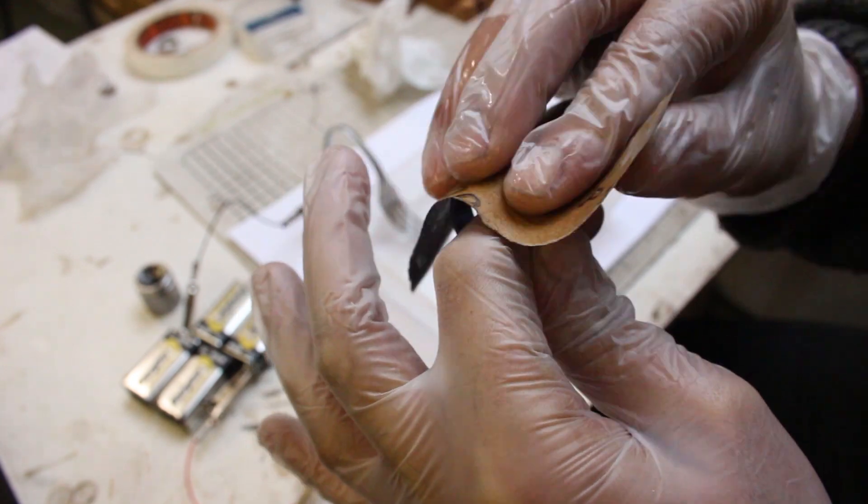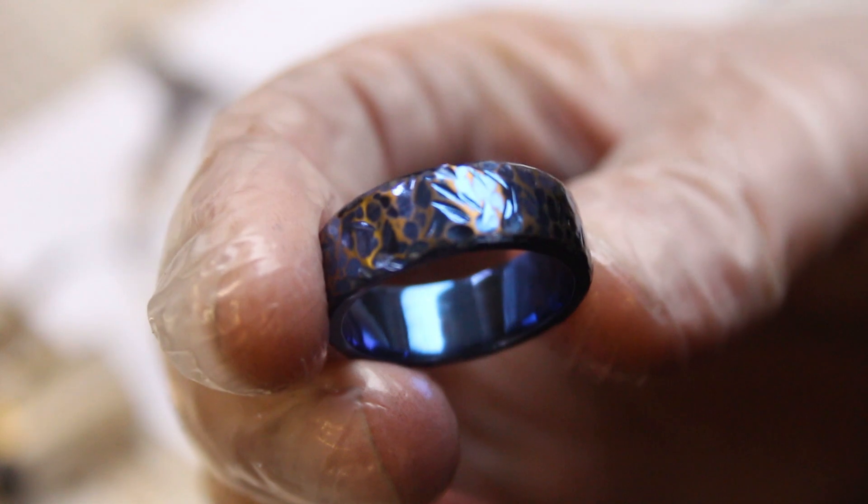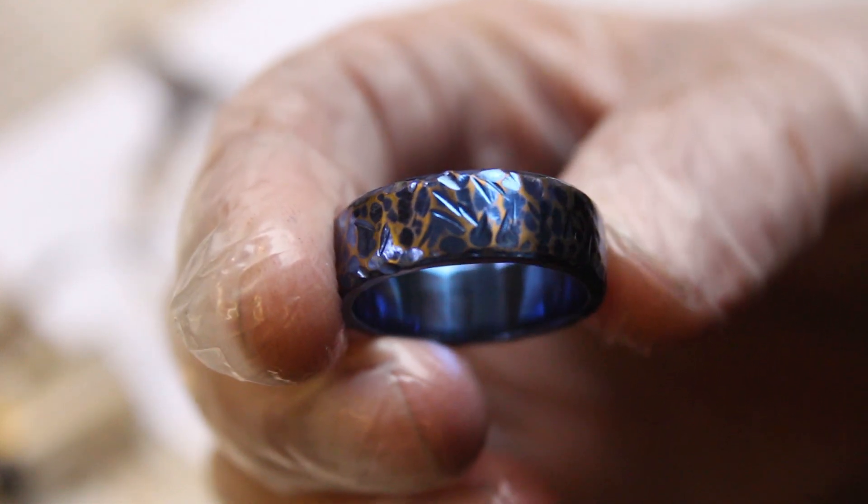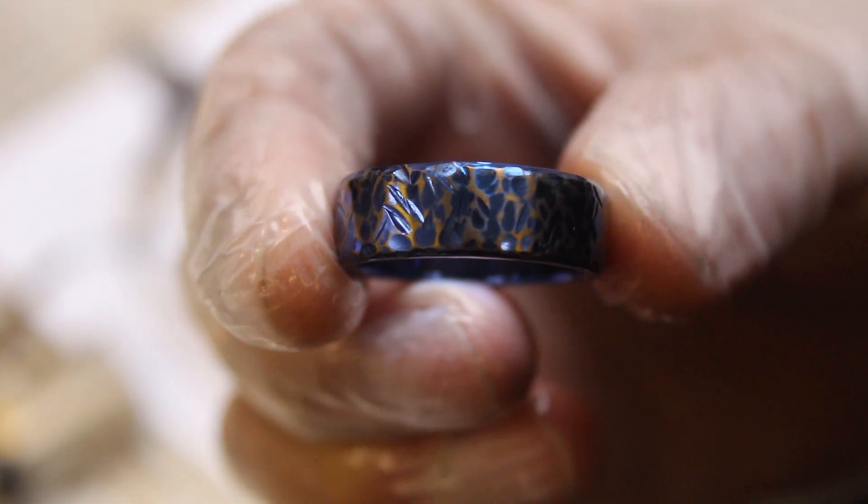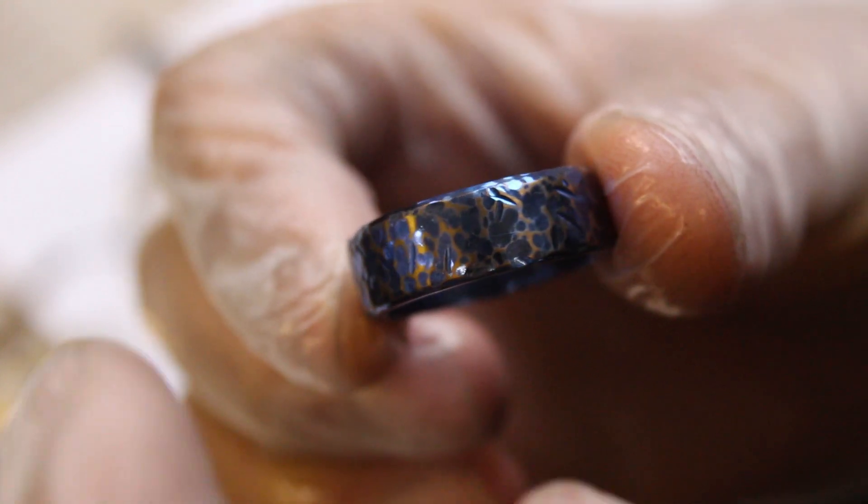So I kind of went back over and I anodized the whole ring up with four batteries which turned into like a blue color, sanded off the outside, and then anodized it again with one battery to get that gold webbing. And yeah, what do you guys think of that?